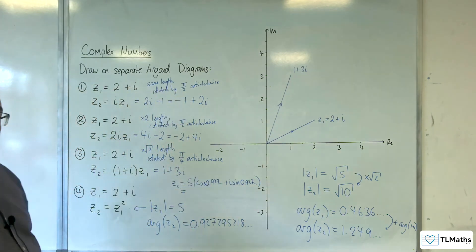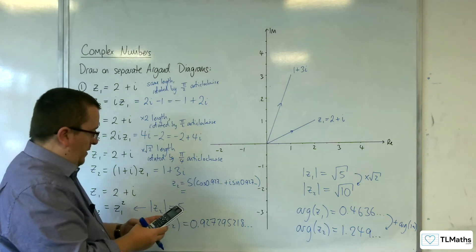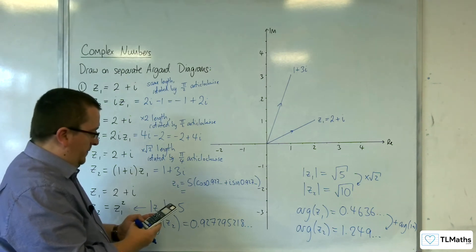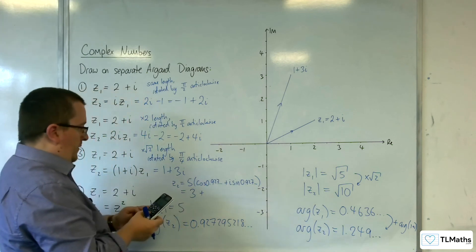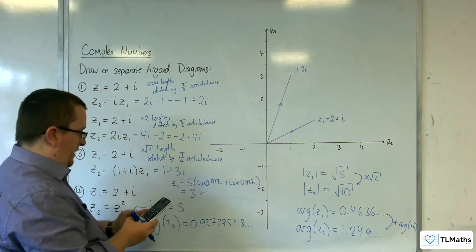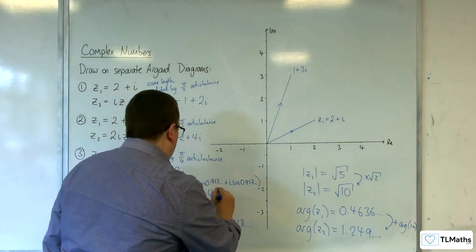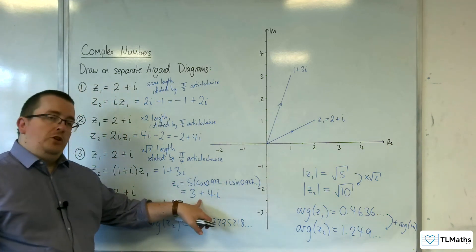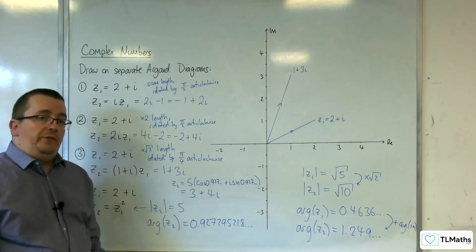If we convert that back into Cartesian form, 5 times cosine of the 0.927295218, we get 3. So we are hypothesizing that z₂ should be 3 plus 4i, if it follows the same rules that we're seeing here.